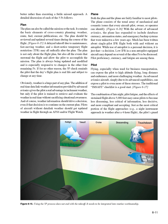Plane — both the plan and the plane are fairly familiar to most pilots. The plane consists of the usual array of mechanical and cosmetic issues that every aircraft pilot, owner, or operator can identify. With the advent of advanced avionics, the plane has expanded to include database currency, automation status, and emergency backup systems. Much has been written about single-pilot IFR flight both with and without an autopilot. While use of autopilot is a personal decision, low IFR in a non-autopilot-equipped aircraft may depend on several of the other Ps, including pilot proficiency, currency, and fatigue.